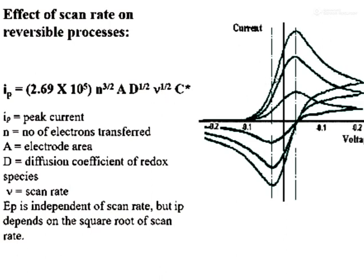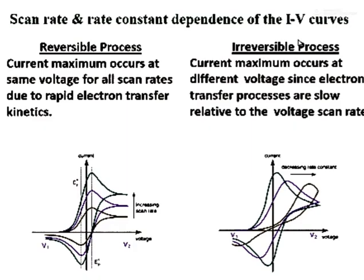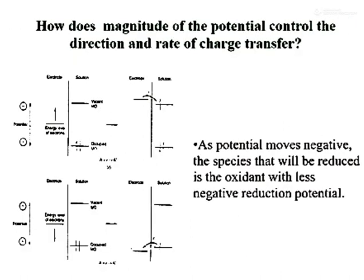Comparing reversible and irreversible processes: in a reversible process, increasing the scan rate only increases the current while the peak positions remain the same. In an irreversible process, however, the positions of E_PC and E_PA also change with increasing scan rate. This is because the electron transfer process is slow relative to the voltage scan rate — as you increase the scan rate, the reduction/oxidation process cannot keep pace, and hence the peak positions shift.